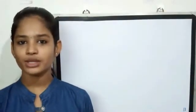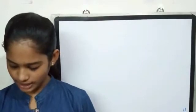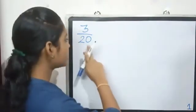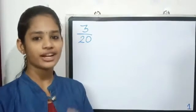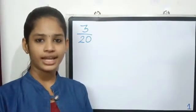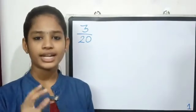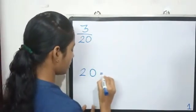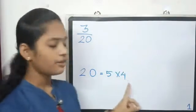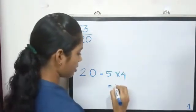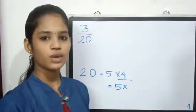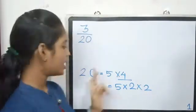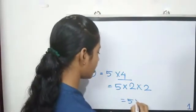Let's go to page number 26: write the fractions in decimal form. First question: 3 by 20. 20 is the denominator. 20 is the factor of 10. 20 is 5 into 4. 5 into 4 is 20. 2 into 2 is 4. 5 into 2 into 2 is 20. 20 is the factor of 10.